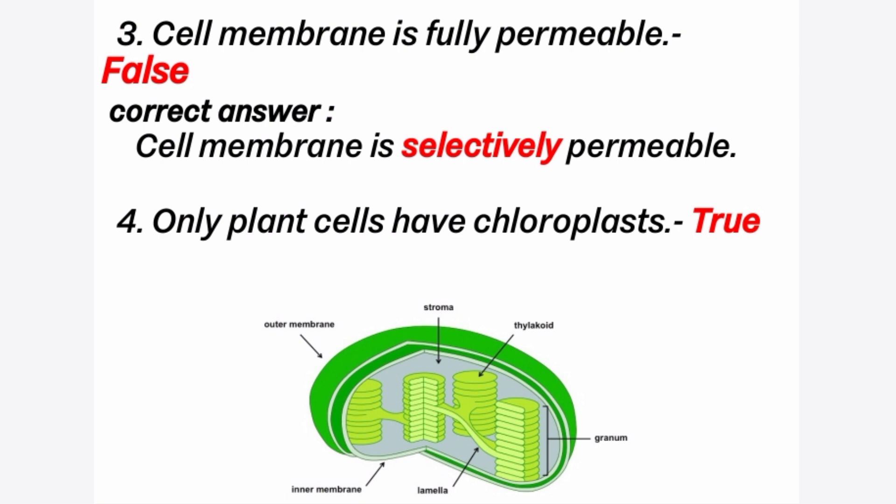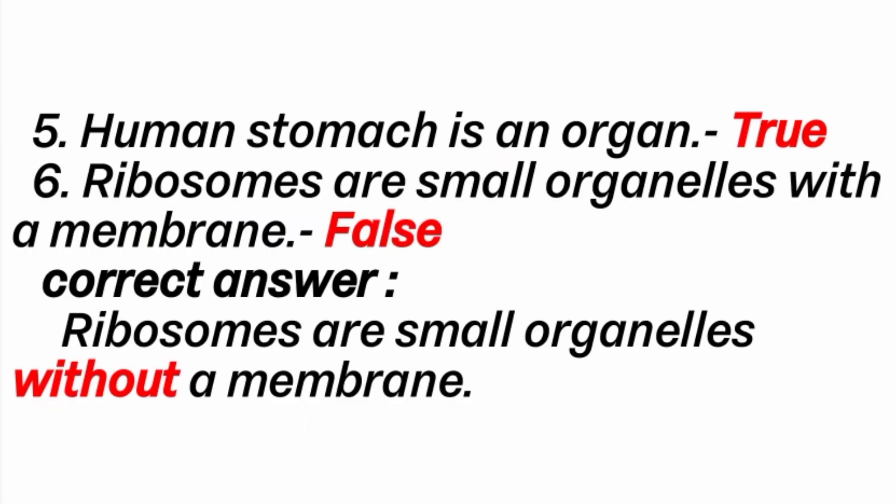Fourth question: only plant cells have chloroplast. Answer is true. Fifth question: the human stomach is an organ. Answer is true. Sixth question: ribosomes are small organelles with a membrane. Answer is false. Correct answer: ribosomes are small organelles without a membrane.